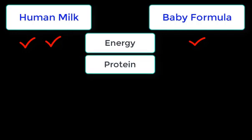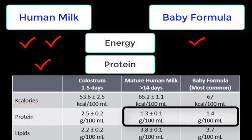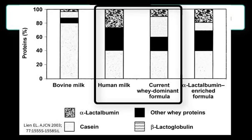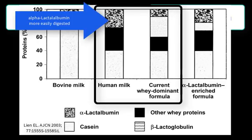For protein, the check mark is clearly going to go with the human milk side. Baby formulas are adjusted so they have the same amount of milk protein as human milk, but it's the type of protein that cannot be duplicated. Human milk has protein that is more easily digested and it seems to reduce overall GI tract disturbances in those infants.